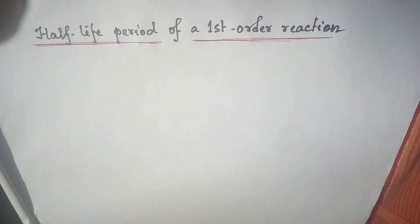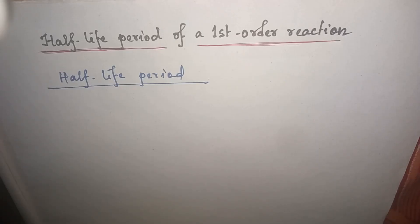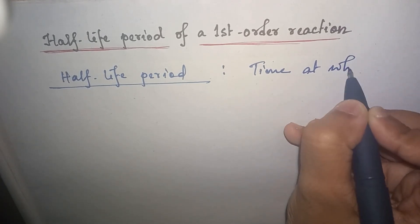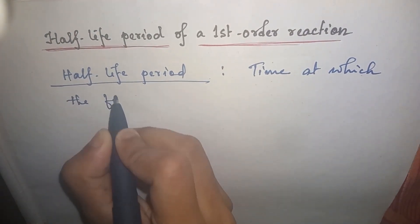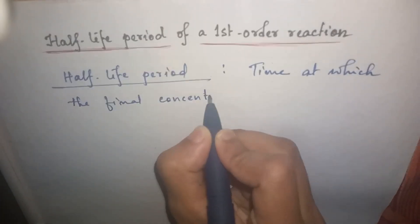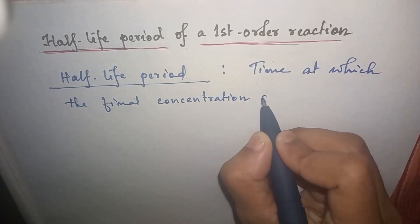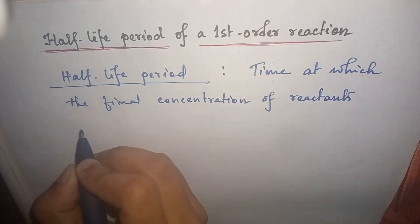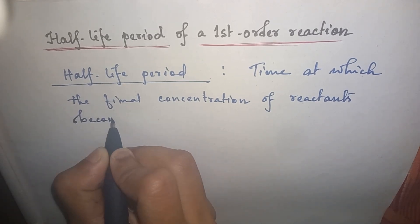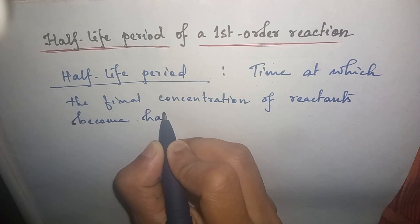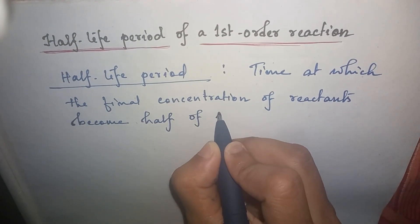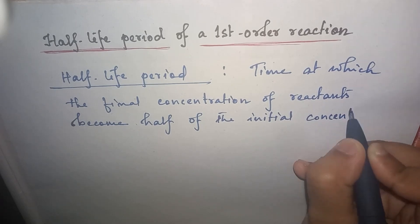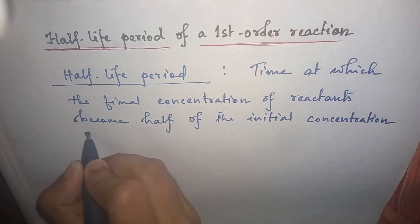Before going to that, we will know what is half-life period. The half-life period of a reaction means the time at which the final concentration of reactants becomes half of the initial concentration of the reactant.